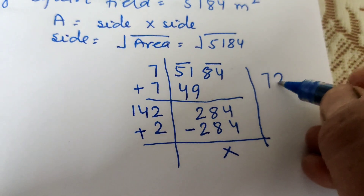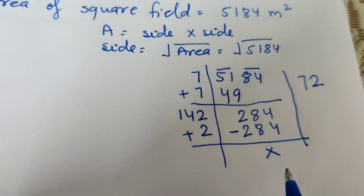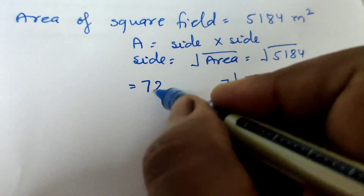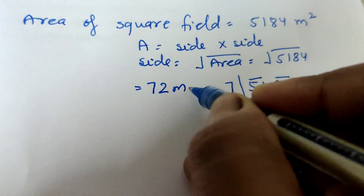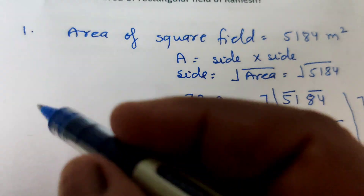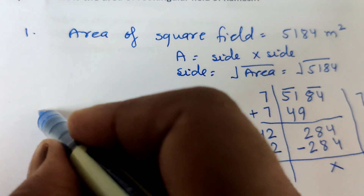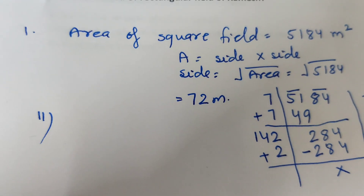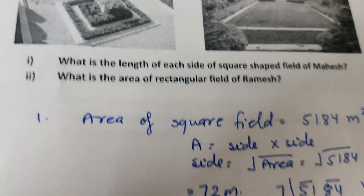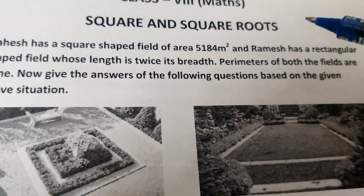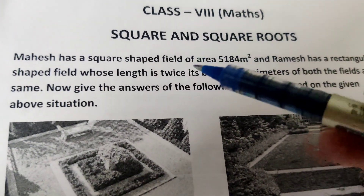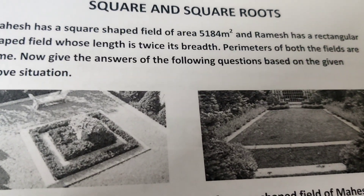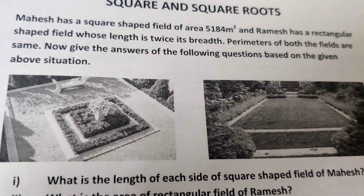The remainder is 0, so the side of the square field is 72 meters. The second part is to find the area of the rectangular field. The length of the rectangular field is twice its breadth, and the perimeter of both fields are the same.